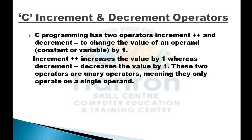Next are increment and decrement operators. Increment means increase — in C, use two plus signs (++). Decrement means decrease — use two minus signs (--). These two operators are unary operators, meaning a unary operator works with only a single operand.